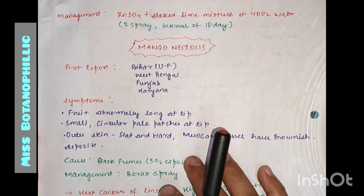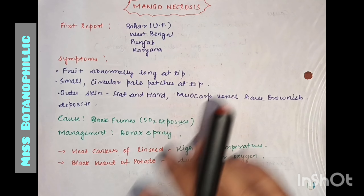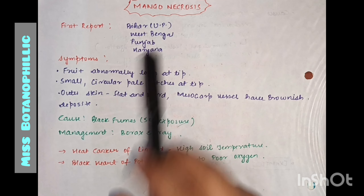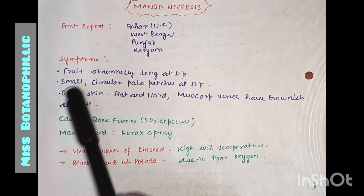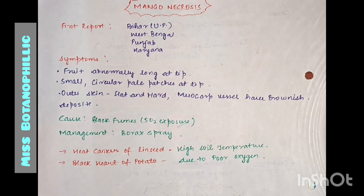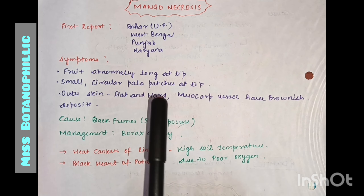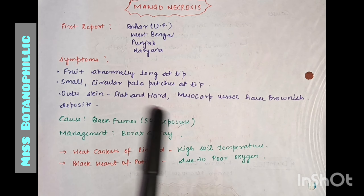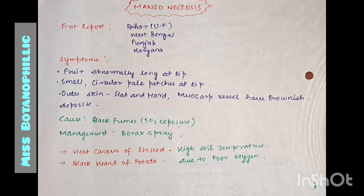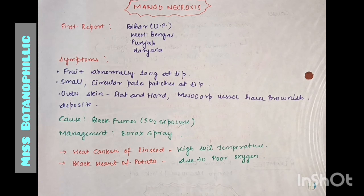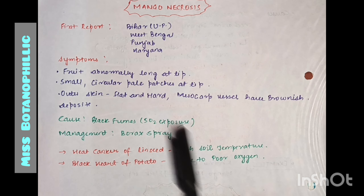The second disease is black tip disease, also called mango necrosis. It was first reported in Bihar, Uttar Pradesh, West Bengal, Punjab, and Haryana. Symptoms include an abnormally long tip, small circular pale patches at the tip, outer skin becomes flattened and hard, and mesocarp vessels show brownish deposits. It is caused by black fumes due to sulfur dioxide (SO₂) exposure. Management involves using Borax spray.